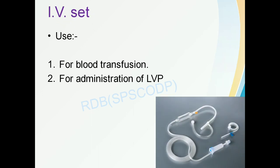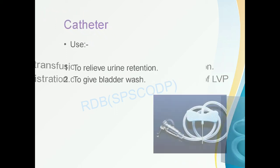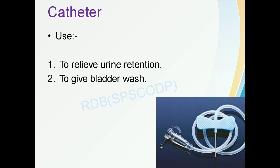Next is the IV set. The IV set is used for blood transfusion and for administration of large volume parenterals such as saline or blood. Next is the catheter, used to relieve urine retention and to give a bladder wash. If a patient is unable to urinate naturally due to kidney disease or urine retention, a catheter is used.